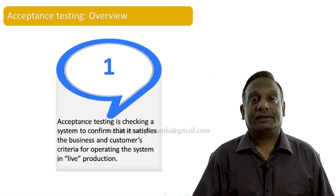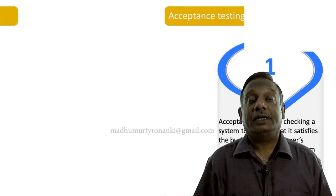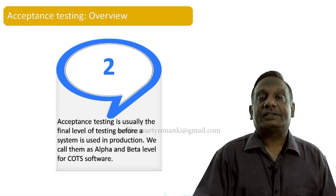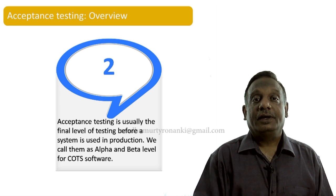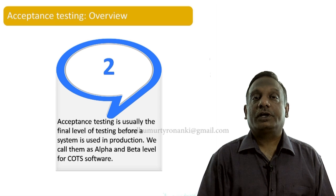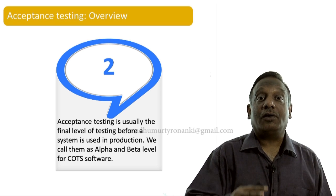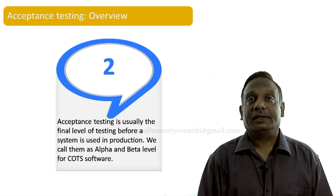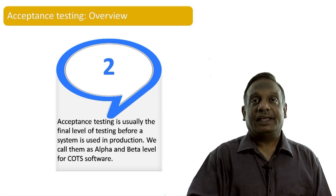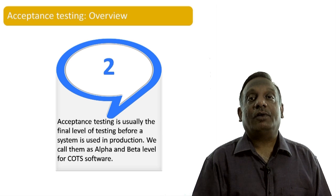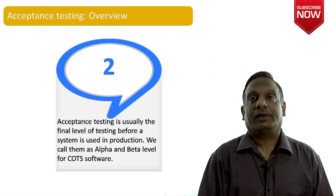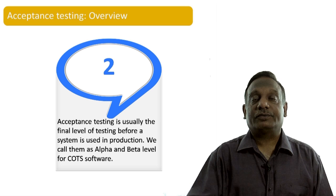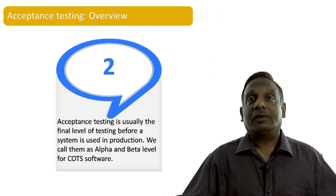Acceptance testing is usually the final level of testing before a system is used in production. We sometimes call it alpha level testing or beta level testing when we are doing the same kind of activity while developing what we call COTS software. COTS stands for commercial off-the-shelf software, or software products or packaged applications.